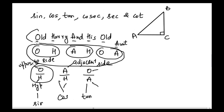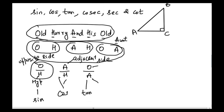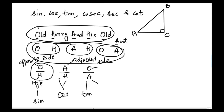If you can memorize this sentence, you can easily recall the values of sine, cosine, and tangent for any given right-angle triangle. Keep in mind that all six trigonometric ratios are associated with angles — sine by itself doesn't mean anything, but sine 30 degrees does.